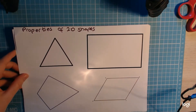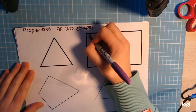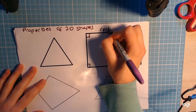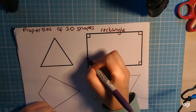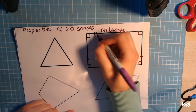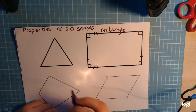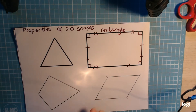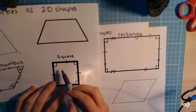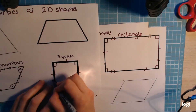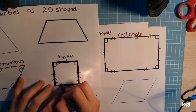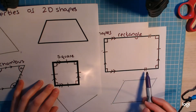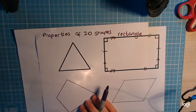We've got a rectangle, which is very similar to a square — in fact, a square is a special type of rectangle. A rectangle has four right angles, two sets of parallel sides, and two equal sides on one pair and two equal sides on the other pair. The only difference from a square is that on a square all sides are the same length, whereas on a rectangle one pair is a different length to the other — it's just been stretched out a bit.